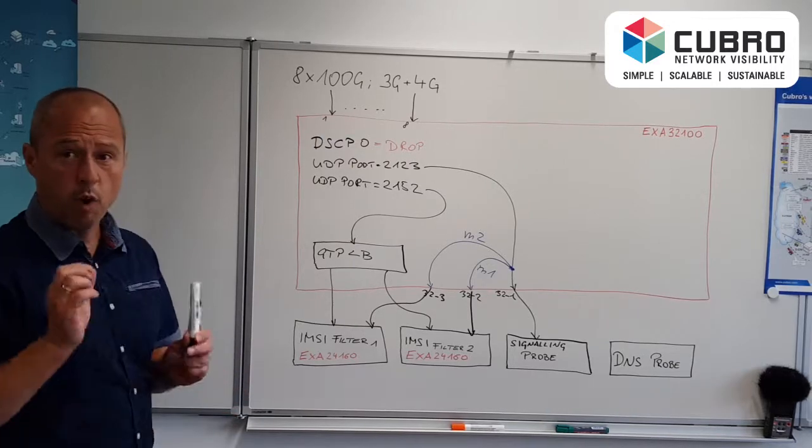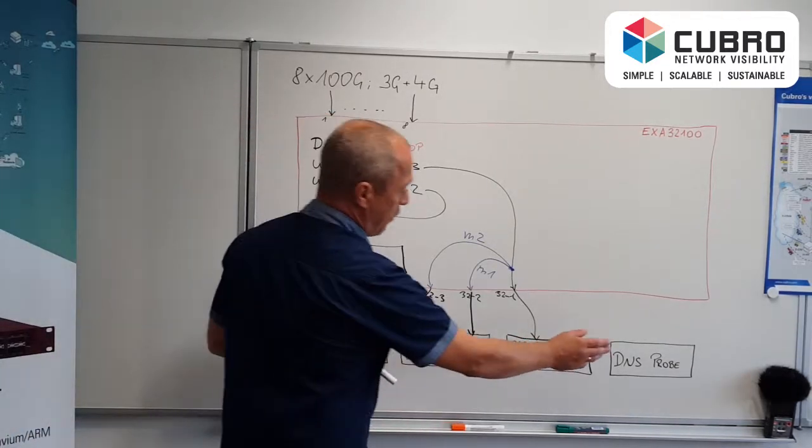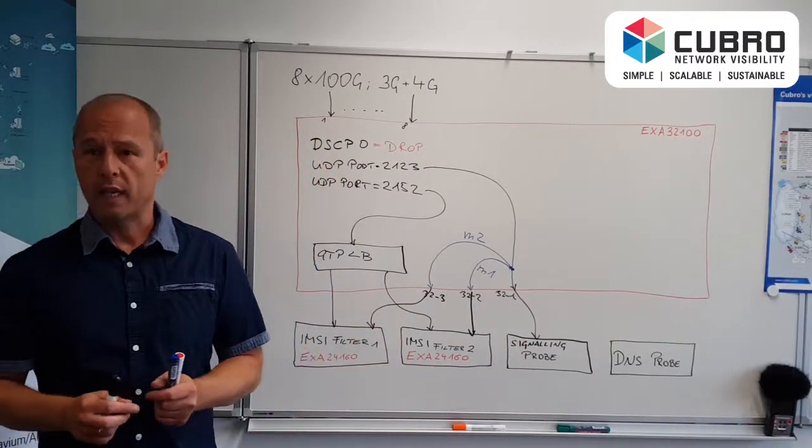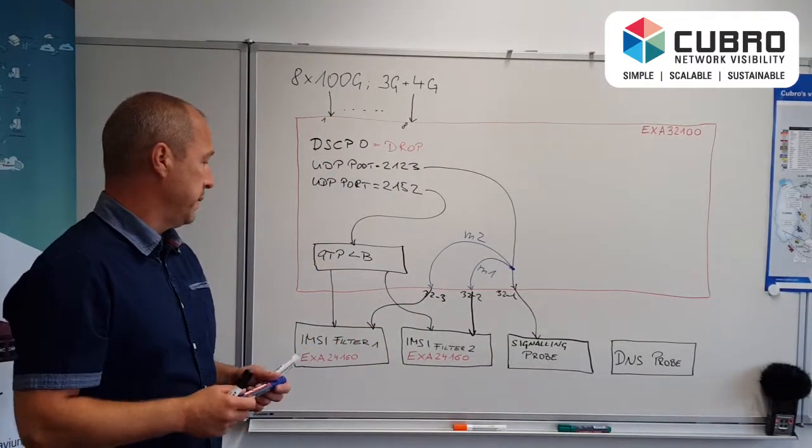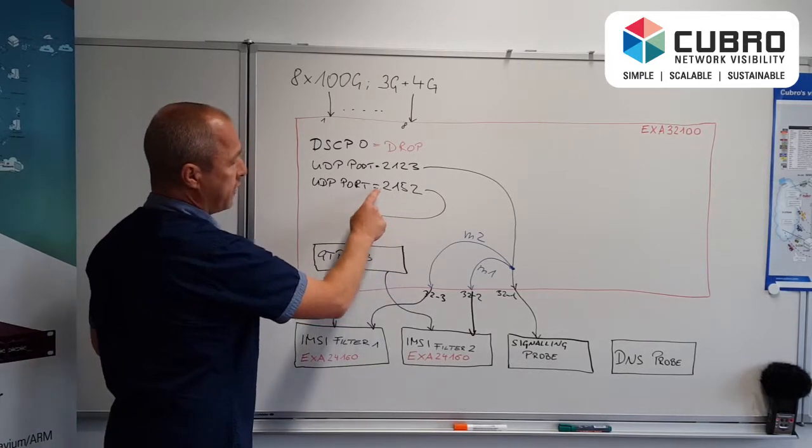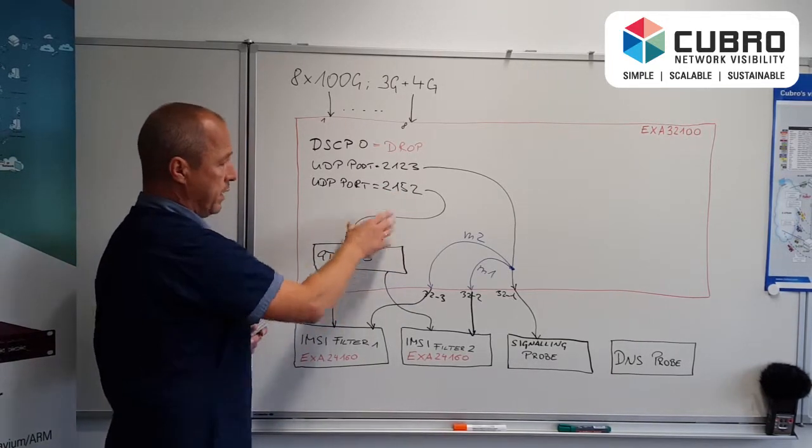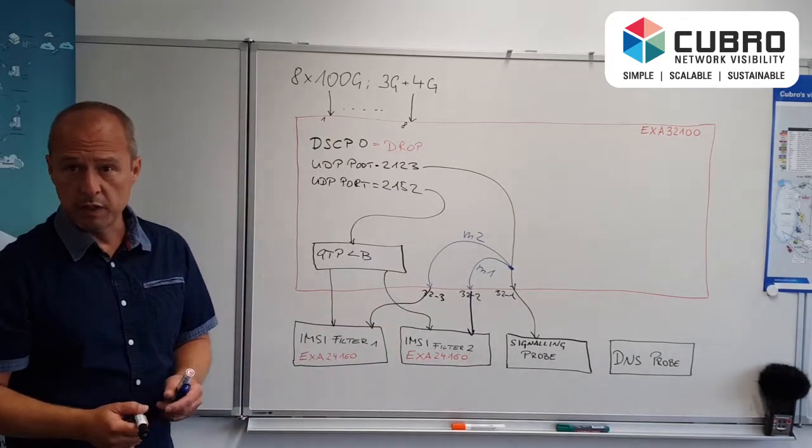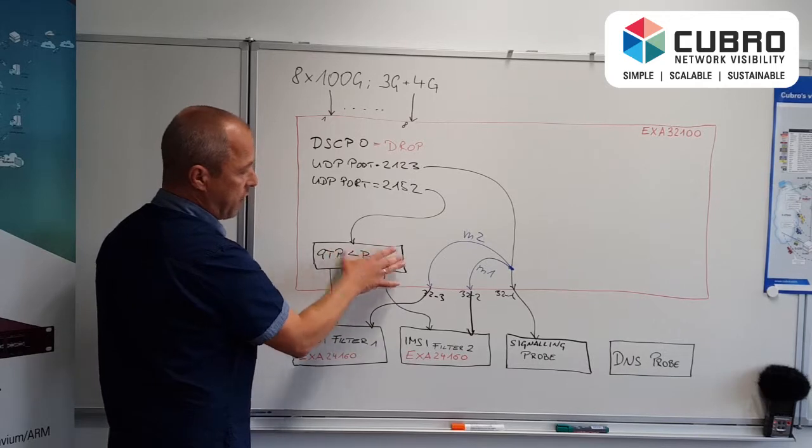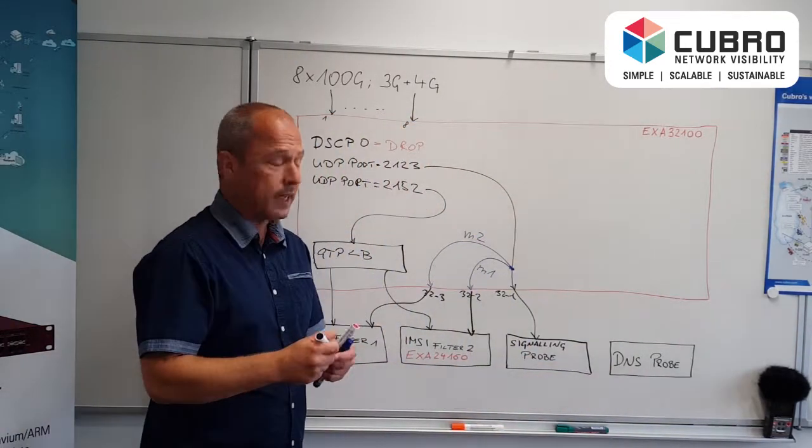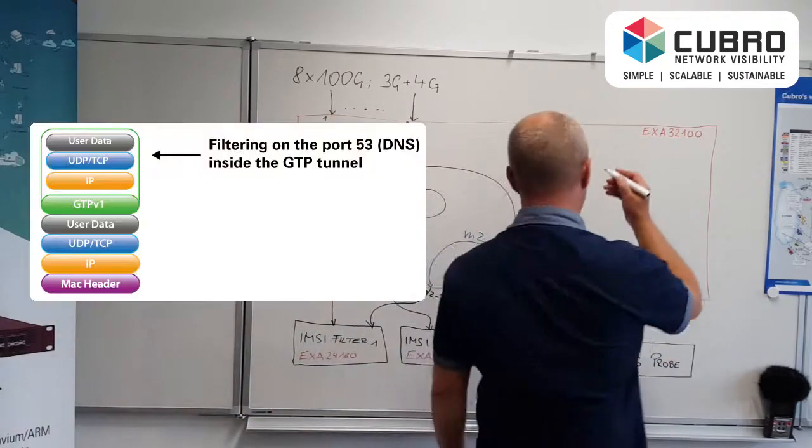So now there is one complication at the end. We have one specific probe called DNS probe. That probe should get all the DNS traffic. DNS traffic is part of the user traffic. So it's already included here and we send it out. So what can we do is we need another copy of this traffic here and feed it here, plus a filter criteria. How can we filter DNS?